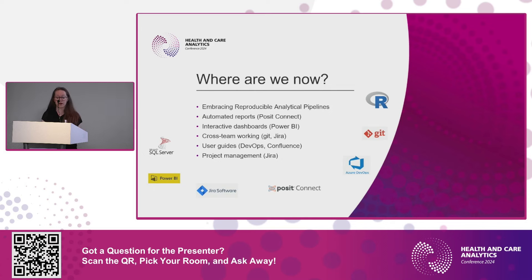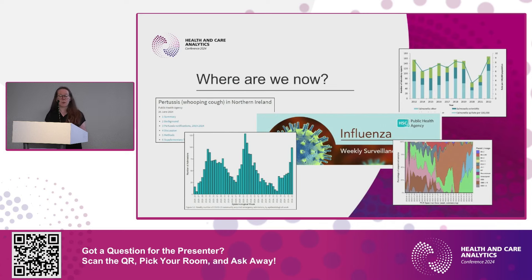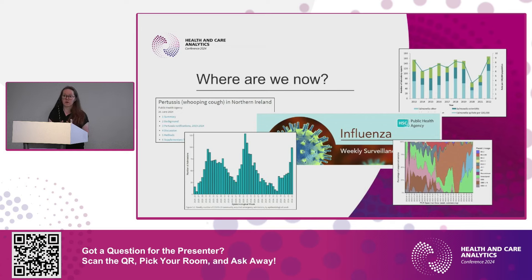We use Power BI to create interactive dashboards. These are some screenshots of some of the public-facing reports we have on the PHA website — most are created using R and R Markdown. Posit Connect is handy for automating the production of these, but it's also useful for internal reports, allowing us to keep an eye on disease patterns before they go into the public reports, and also to monitor the pipelines themselves for quality assurance and data validation.